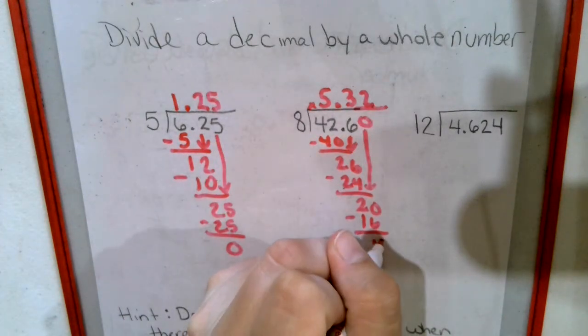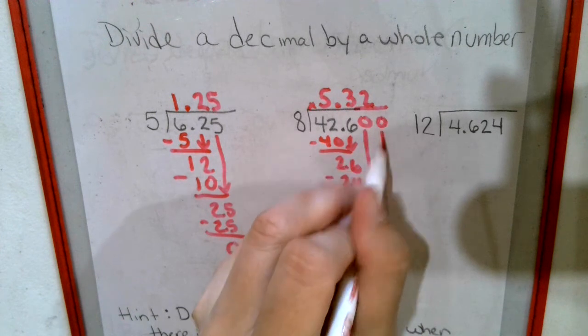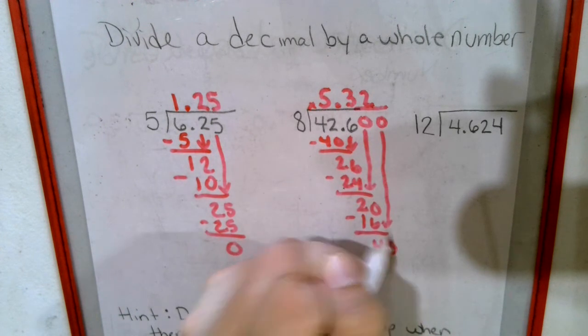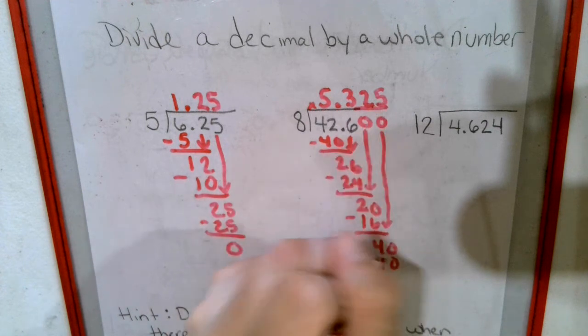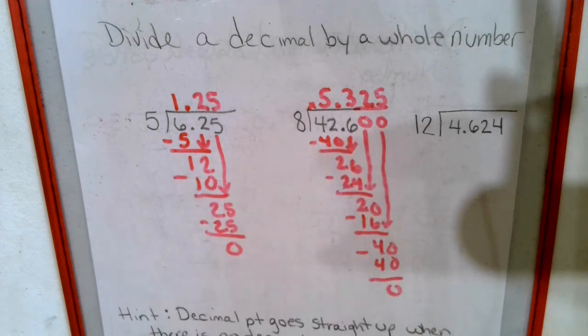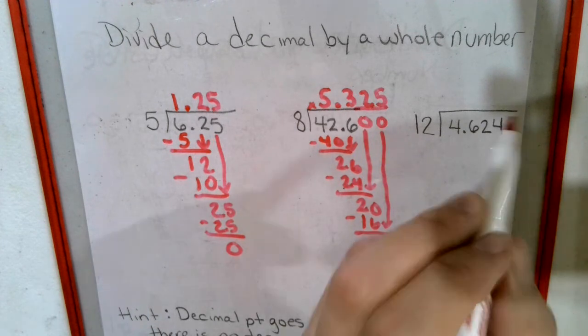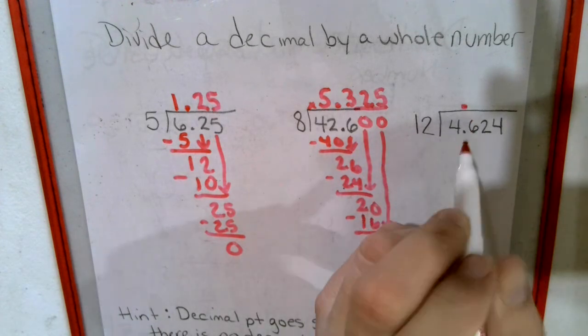Subtract, I get 4 and add another 0. Bring it down. 8 goes into 40 five times to make 40. Nothing left over. Now raise my decimal straight up.